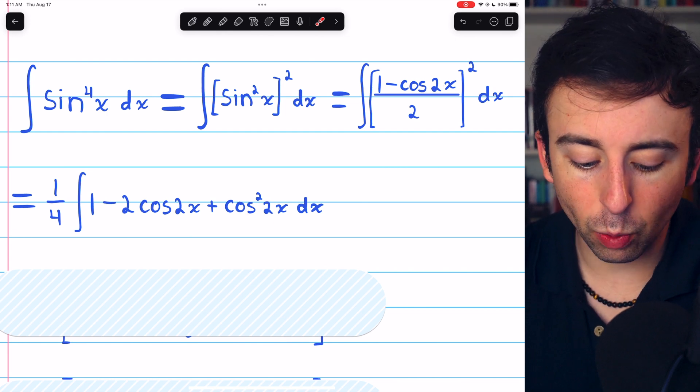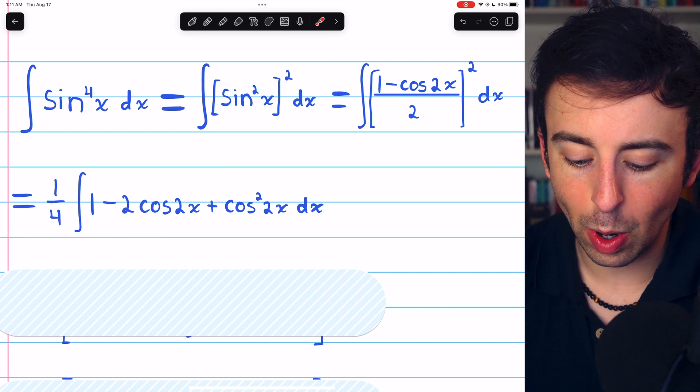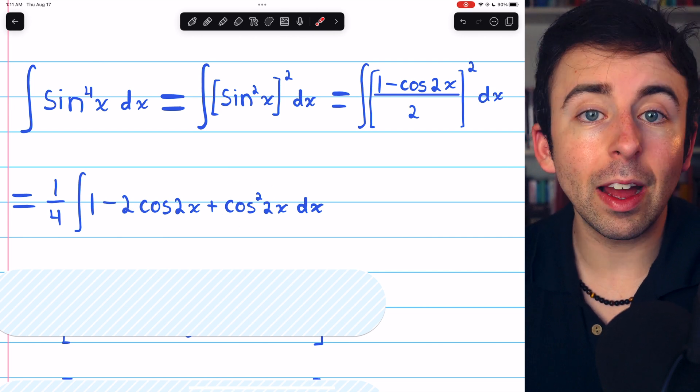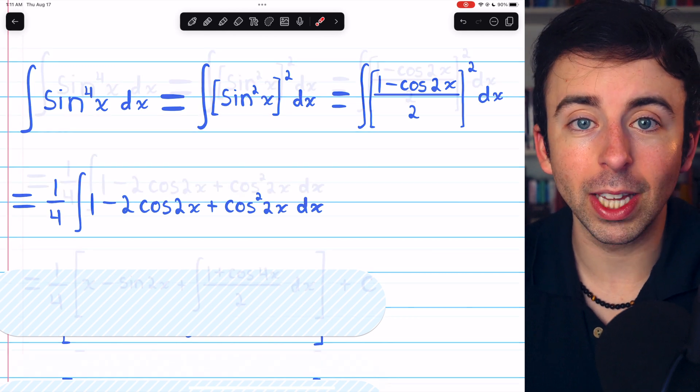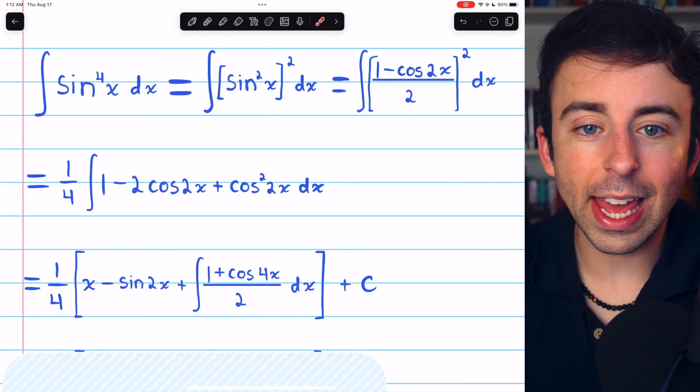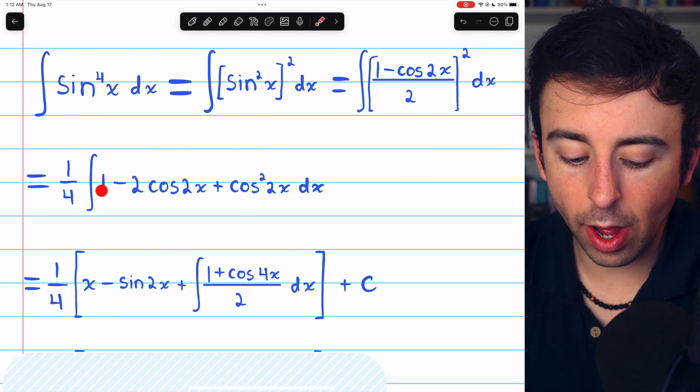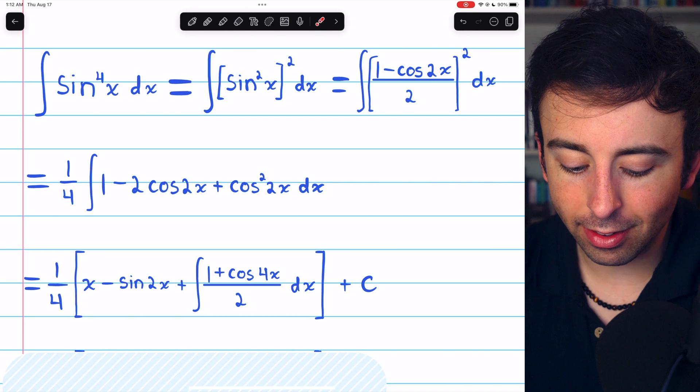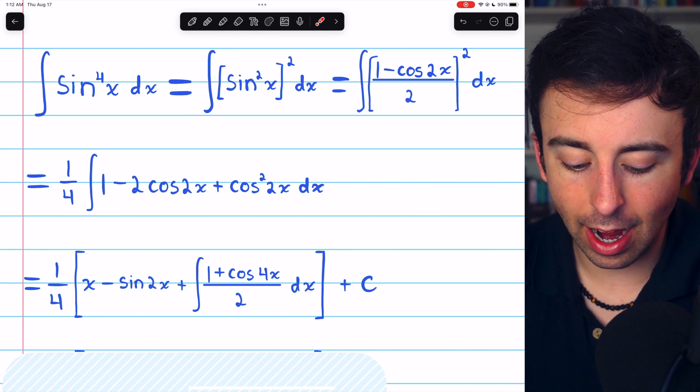We can integrate the 1. We can integrate the minus 2 cosine 2x, but to integrate the cosine squared of 2x, we'll have to apply the power-reducing formula. So, integrating what we can and leaving the 1 fourth out front, 1 integrates to x. Minus 2 cosine of 2x integrates to minus sine of 2x.